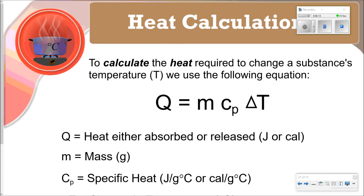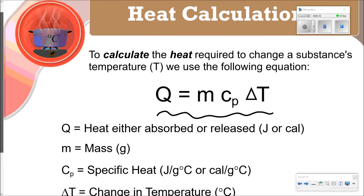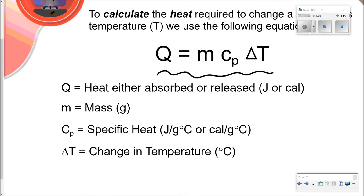To calculate the heat required to change a substance's temperature, we use Q = mcΔT. Q is the heat absorbed or released — if absorbed, Q is positive; if released, Q is negative. Q can be in joules or calories. Mass is in grams, specific heat is in one of the two units previously discussed, and change in temperature is in degrees Celsius.